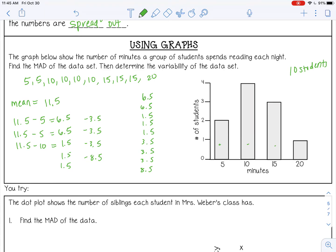So when I did that, I got a MAD of 3.8, which means a pretty low variability.